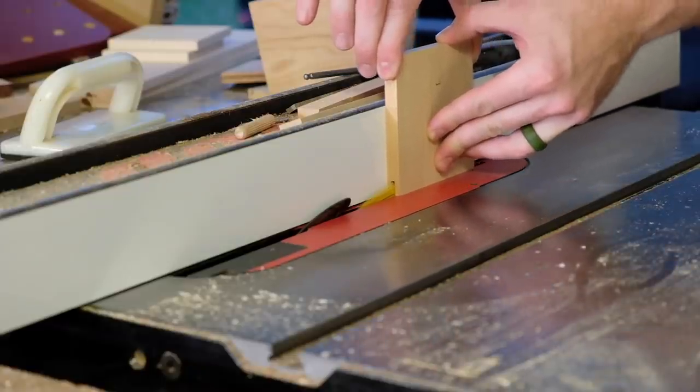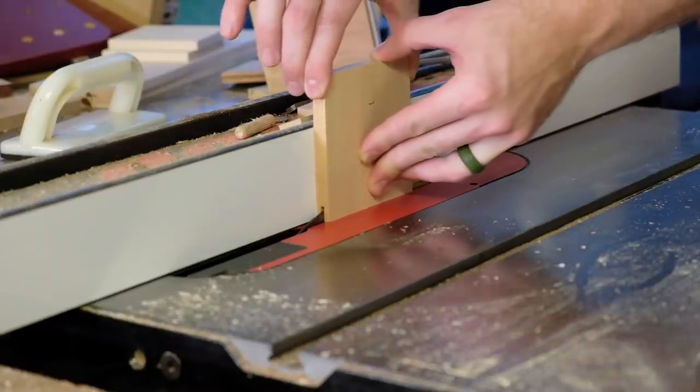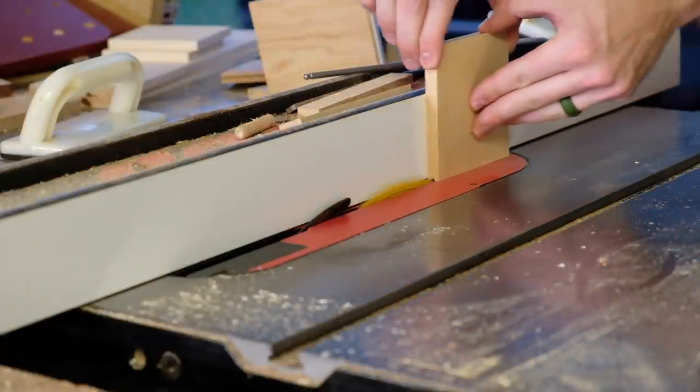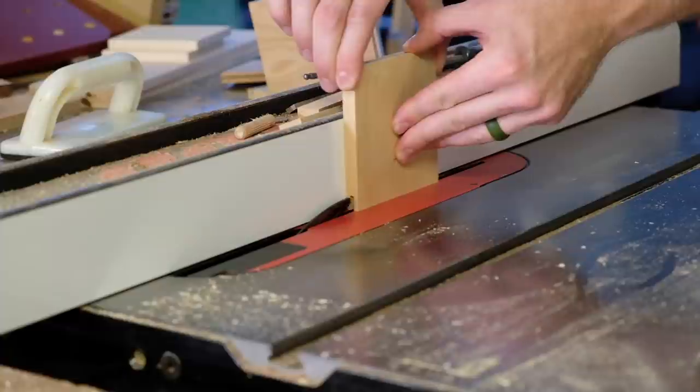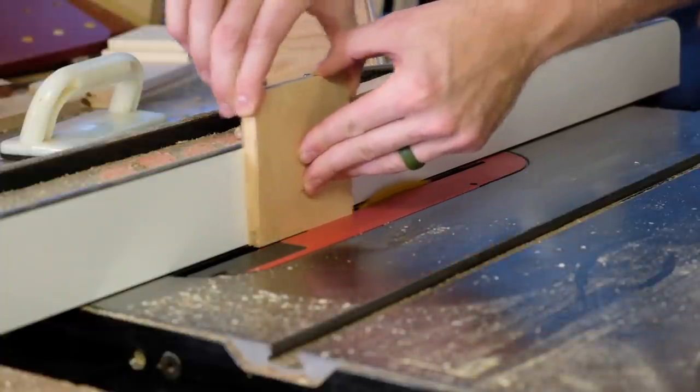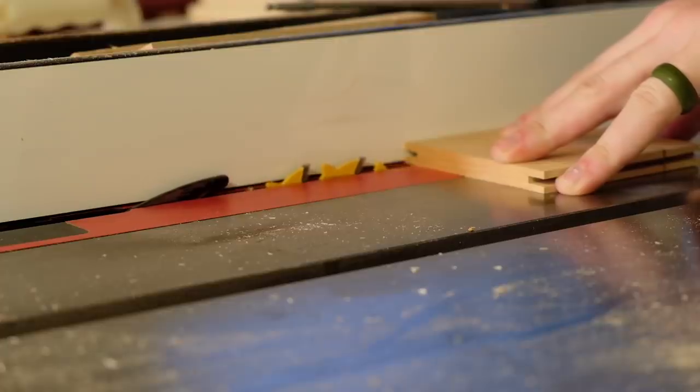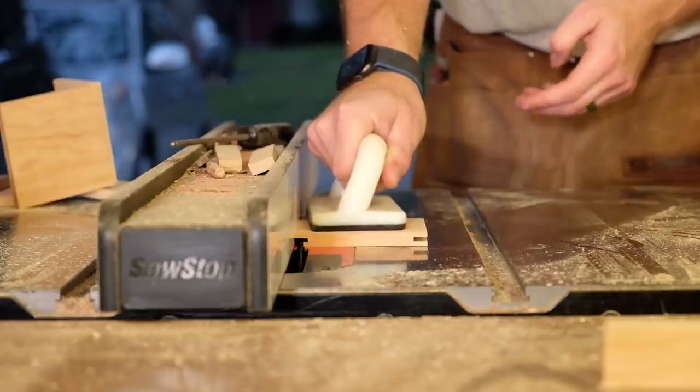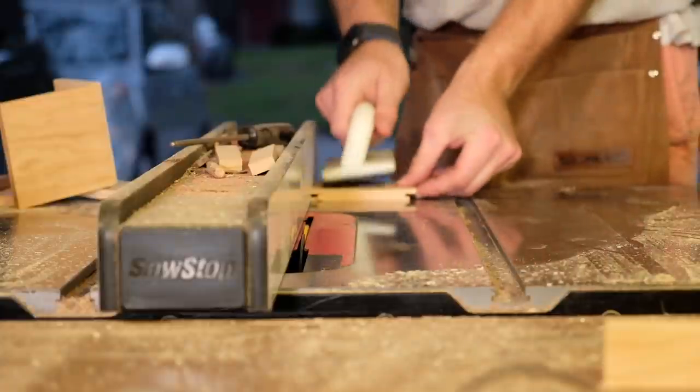The joinery for the drawers is a half blind lock joint also called a tongue and dado joint. I have a video going over the joint so I'll quickly go over it now. The first cut is made into either end of the drawer front at a depth equal to the thickness of the drawer sides. The distance between the fence and the blade is the most critical part of the joint and requires a few test cuts to get right.